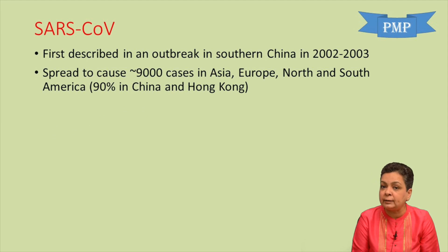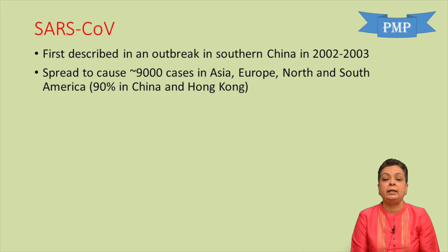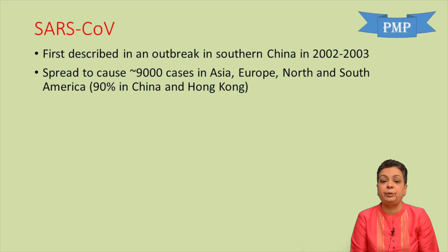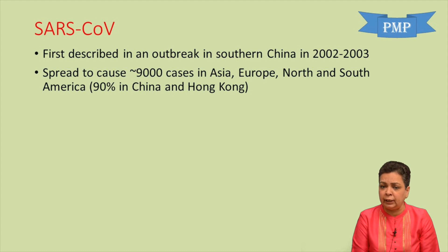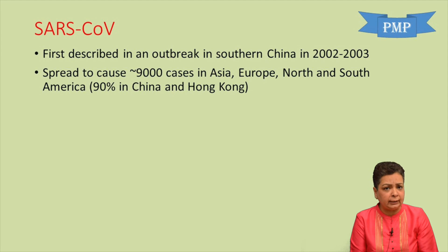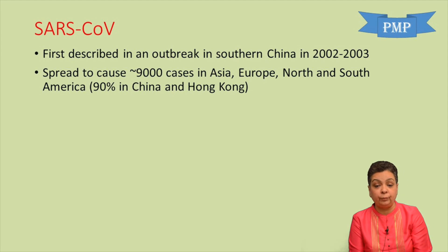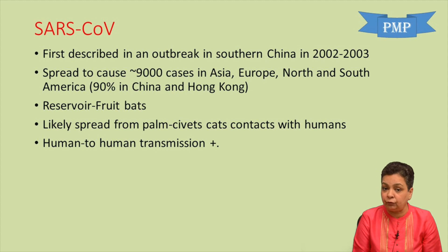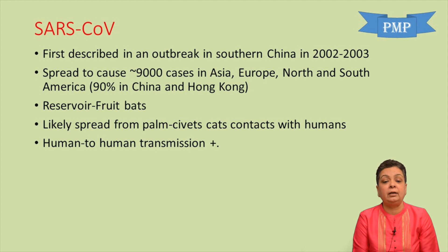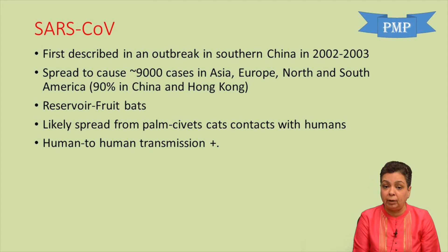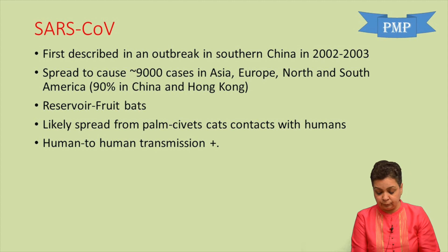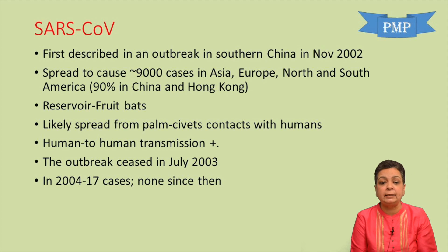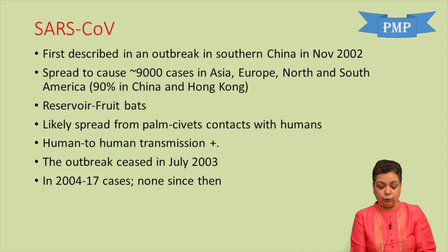Coming to special coronaviruses — SARS and MERS. SARS coronavirus was first described in an outbreak in southern China in 2002 to 2003. The SARS virus spread to cause more than 9,000 cases across several countries in Asia, North America, South America, and Europe, but more than 90 percent of cases were reported from China and Hong Kong. There were almost 800 mortalities. The reservoir for SARS coronavirus is fruit bats, likely spread via palm civets through contact with humans in animal markets, with evidence of human-to-human transmission. The outbreak ceased in July 2003, and since then no cases of SARS have been reported.